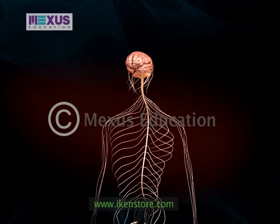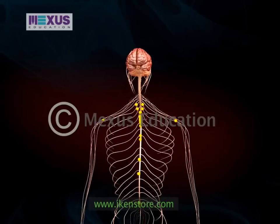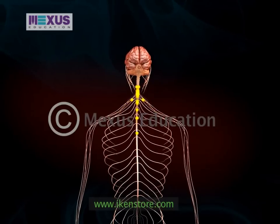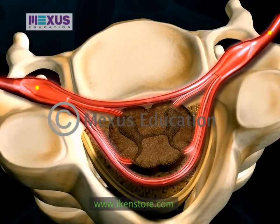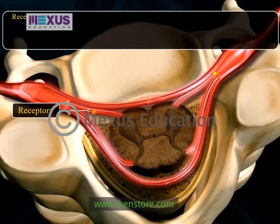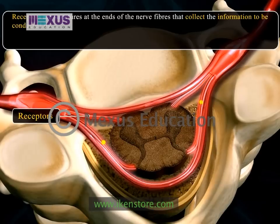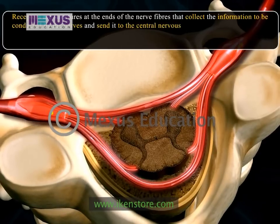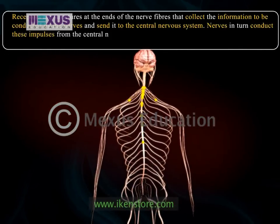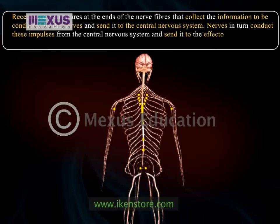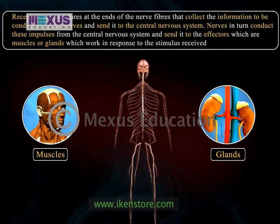Apart from neurons, the brain and the spinal cord, nerves are also important structures because they carry impulses to and from the brain. There are two structures present in nerves: receptors and effectors. Receptors are structures at the ends of nerve fibers that collect the information to be conducted by the nerves and send it to the central nervous system. Nerves in turn conduct these impulses from the central nervous system and send them to the effectors, which are muscles or glands that work in response to the stimulus received from the brain.